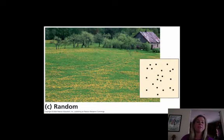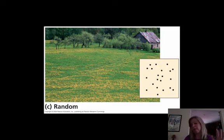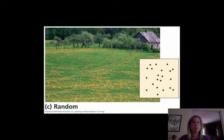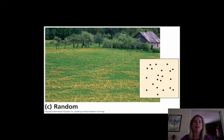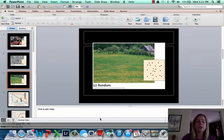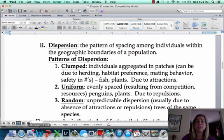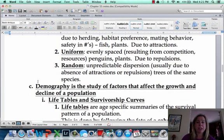Finally, there's random distribution, where there is absolutely no pattern. Individuals could be uniform in some parts, clumped in others — it's just wherever they end up, like wherever seeds fell. Those are all the different dispersion patterns. In the next video, we're going to start talking about demographics.